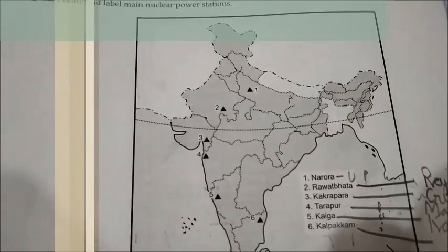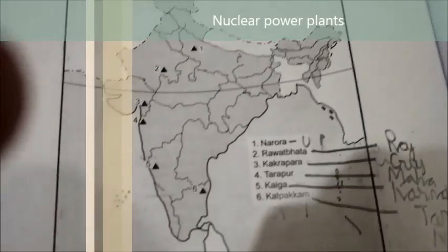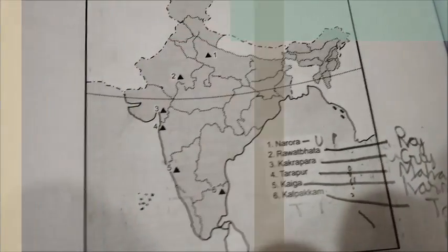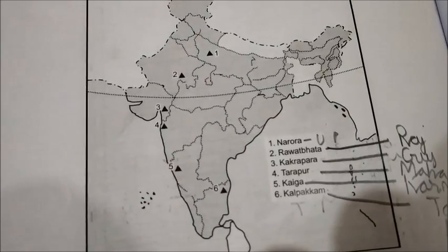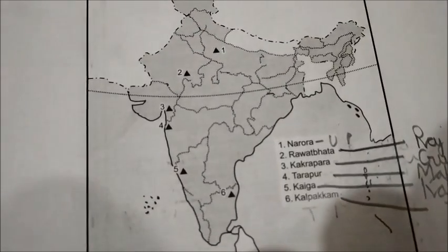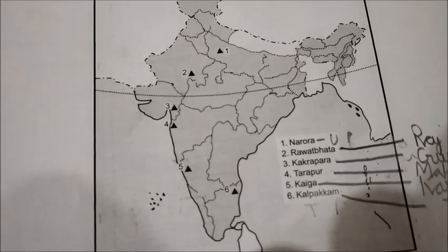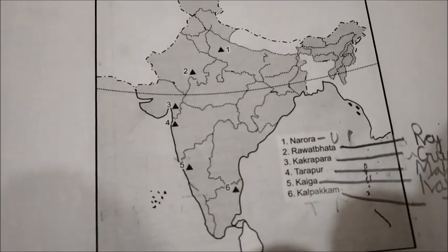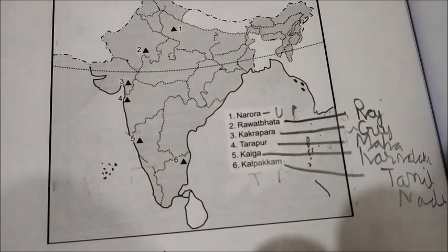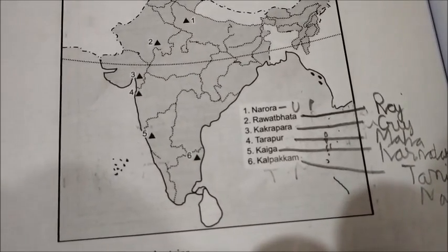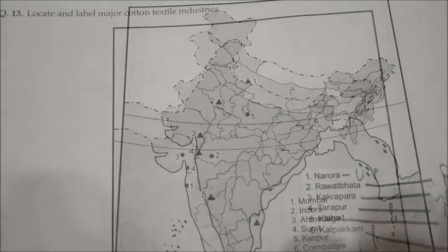This is a very important map — the nuclear power plants. You need to remember all of them. Narora is in Uttar Pradesh. Rawat Bhata is in Rajasthan. Kakrapar is in Gujarat. Tarapur is in Maharashtra. Kaiga is in Karnataka. And Kalpakkam is in Tamil Nadu.